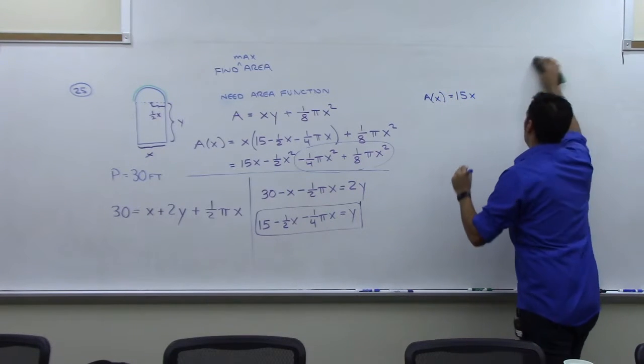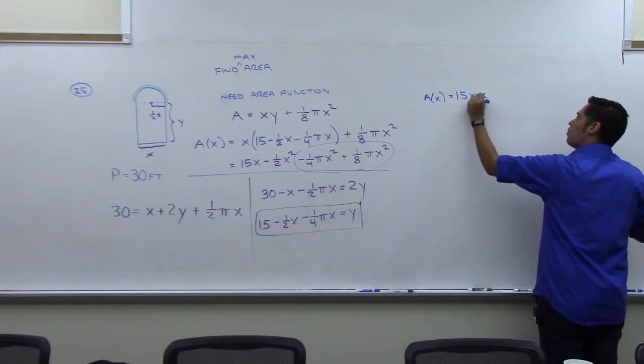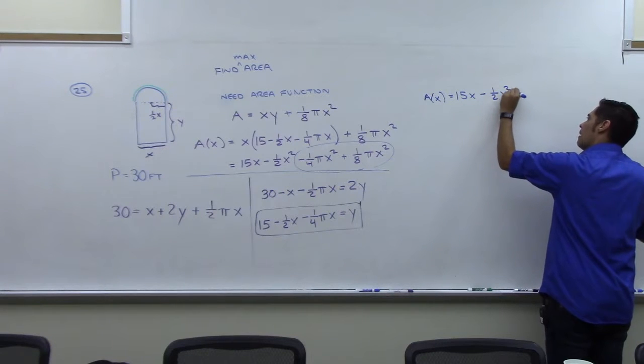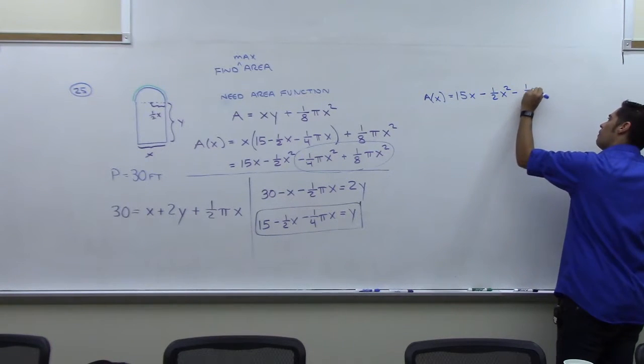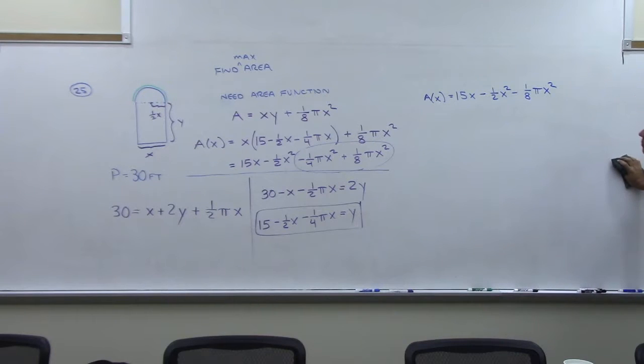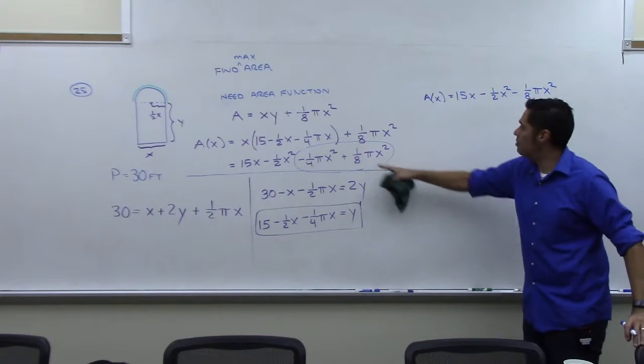15x, and then I've got minus one-half x squared, and minus one-eighth pi x squared. Okay, that's what I get when I put those two together.